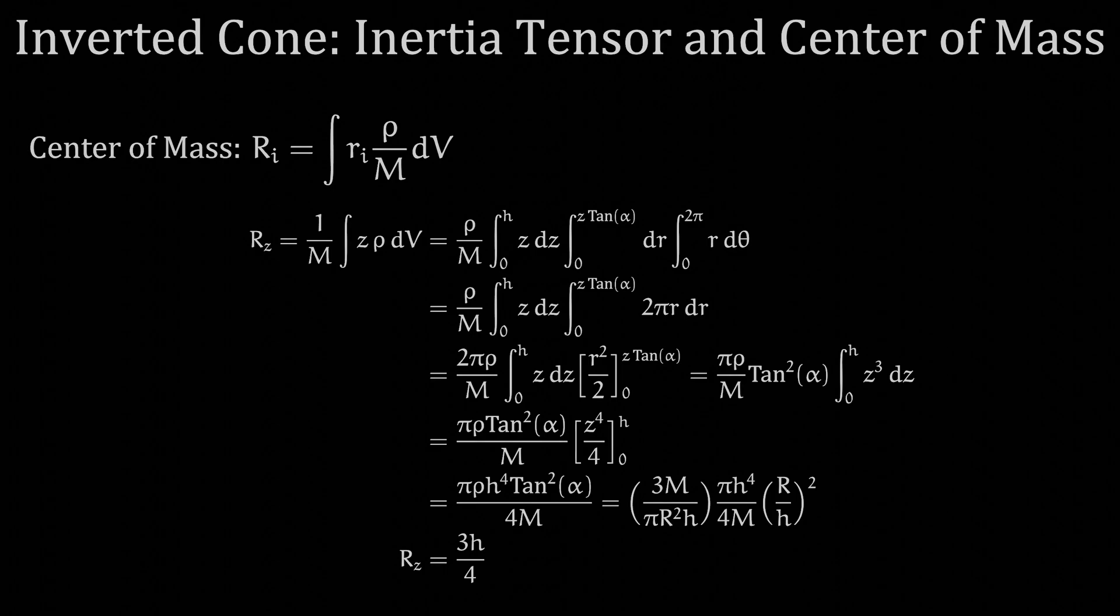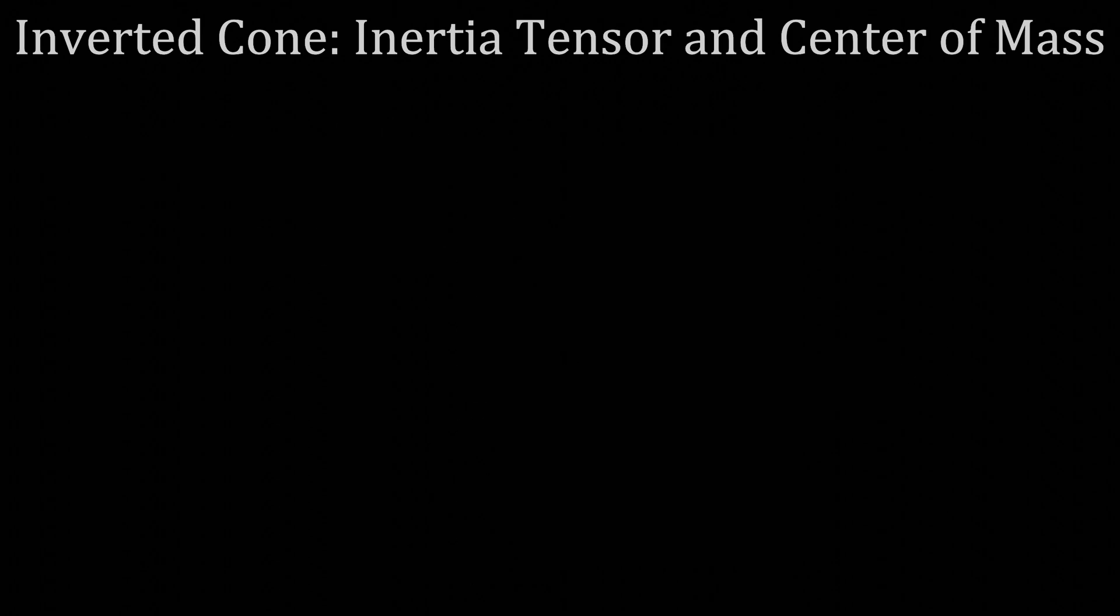Now, we move on to finding the inertia tensor for this cone. The general equation we use to do this is here, for the i-th row and the j-th column as indices of our inertia tensor.